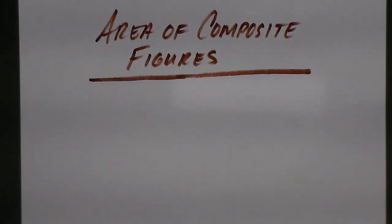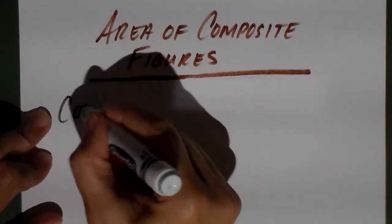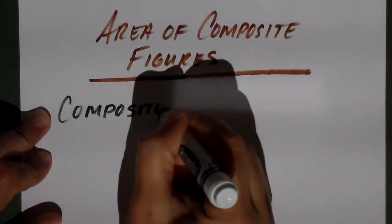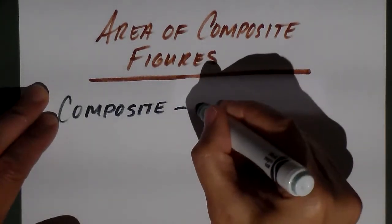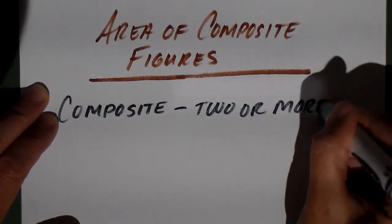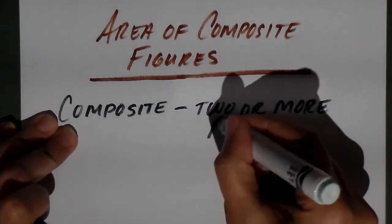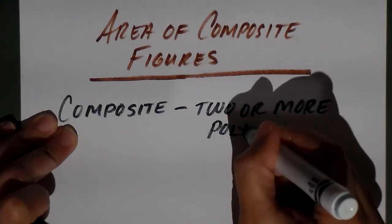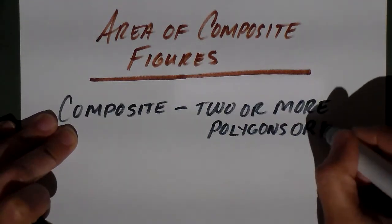I'm going to do a video on the area of composite figures. First, we need to know what a composite figure is. We're going to look at simple two-dimensional figures only — not three-dimensional, not surface area. Composite means two or more, so it's composed of more than one shape. For our purposes, that's two or more polygons or figures.